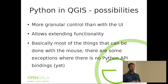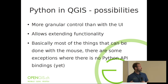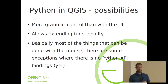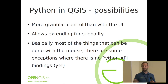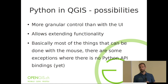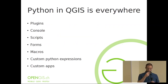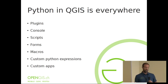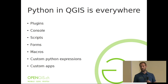What can you do with Python in QGIS? You can have more granular control over the UI, and extend functionality by building your own things. Basically anything you can do with the mouse, you can do with the Python API — and actually you can do more, because you can combine things much more efficiently. In some exceptions there is no Python API binding yet, or sometimes deliberately because it's something that should not be exposed. Python is just about everywhere in QGIS: plugins, Python console, Python scripts, Python in forms, Python in macros, custom Python expressions, and building custom applications.